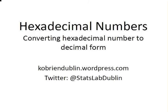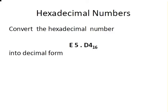In this presentation, we're going to look at how to convert hexadecimal numbers to decimal form. What we're going to do is convert the hexadecimal number E5.D4 into decimal form.